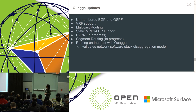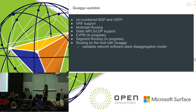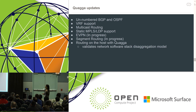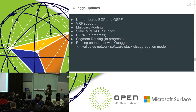Quagga updates — this is a list of things I won't go into in detail. Unnumbered BGP and OSPF: Cumulus has been contributing a lot here. VRF support: Quagga has been made VRF aware. Multicast routing with PIM: we run it on our NOS and it's available in Quagga. Static and MPLS LDP support. EVPN is something we're currently working on with parts in the kernel and user space. Segment routing control plane. Routing on the host with Quagga: we also support running the same version of Quagga on host environments as on our NOS.